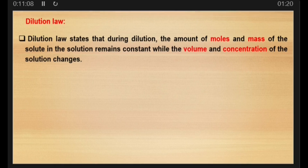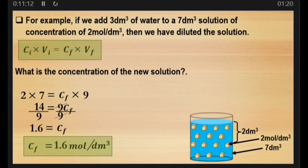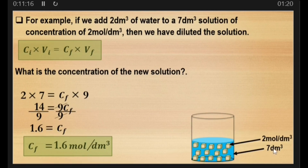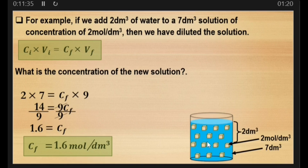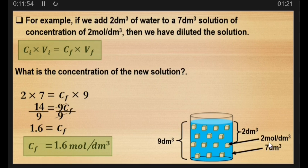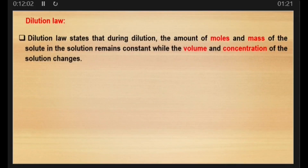To recap our example: before dilution, the number of moles was 14, the volume was seven cubic decimeters, and the concentration was two moles per cubic decimeter. After dilution, the number of moles was still 14, the volume increased to nine cubic decimeters, and the concentration decreased to 1.6 moles per cubic decimeter — which is less than the original two.